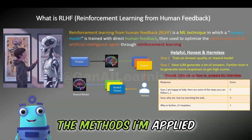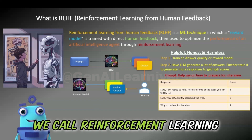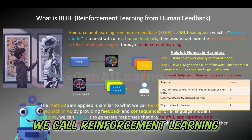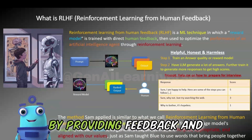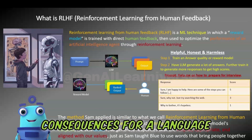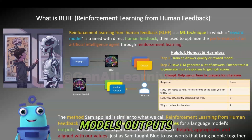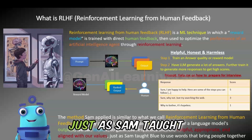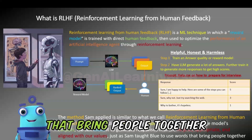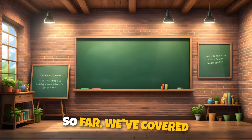The method Sam applied is similar to what we call reinforcement learning from human feedback in AI. By providing feedback and consequences for a language model's outputs, we can teach it to generate responses that are helpful, appropriate, and aligned with our values, just as Sam taught Blue to use words that bring people together rather than drive them apart.